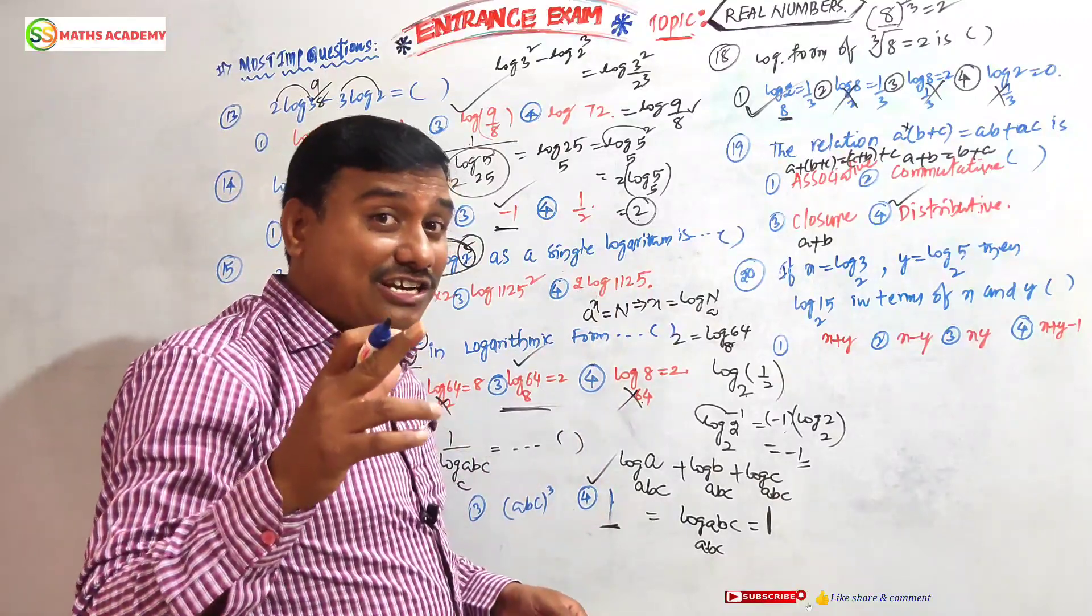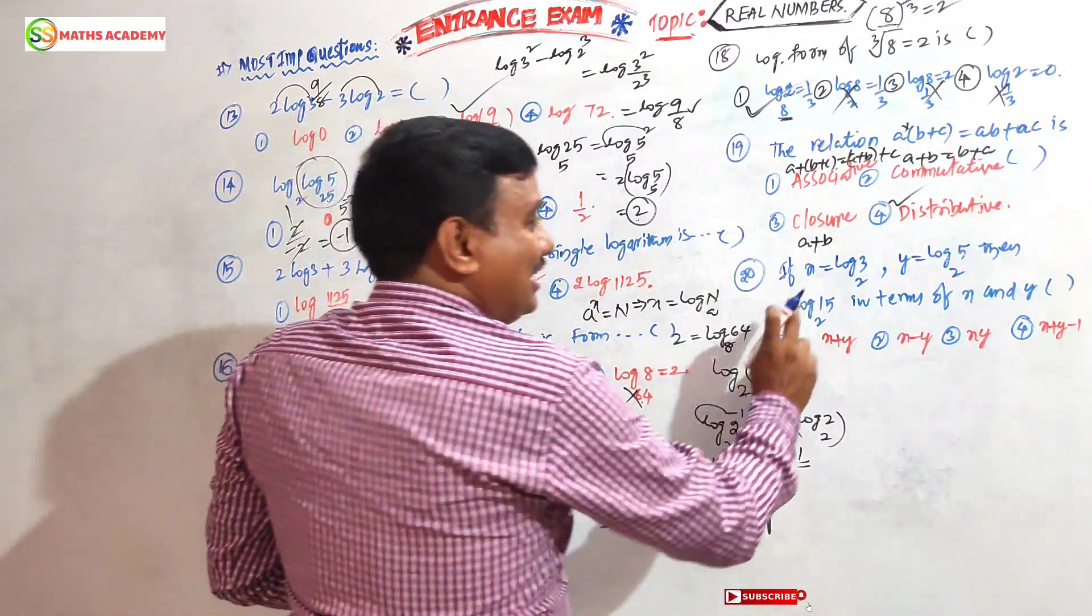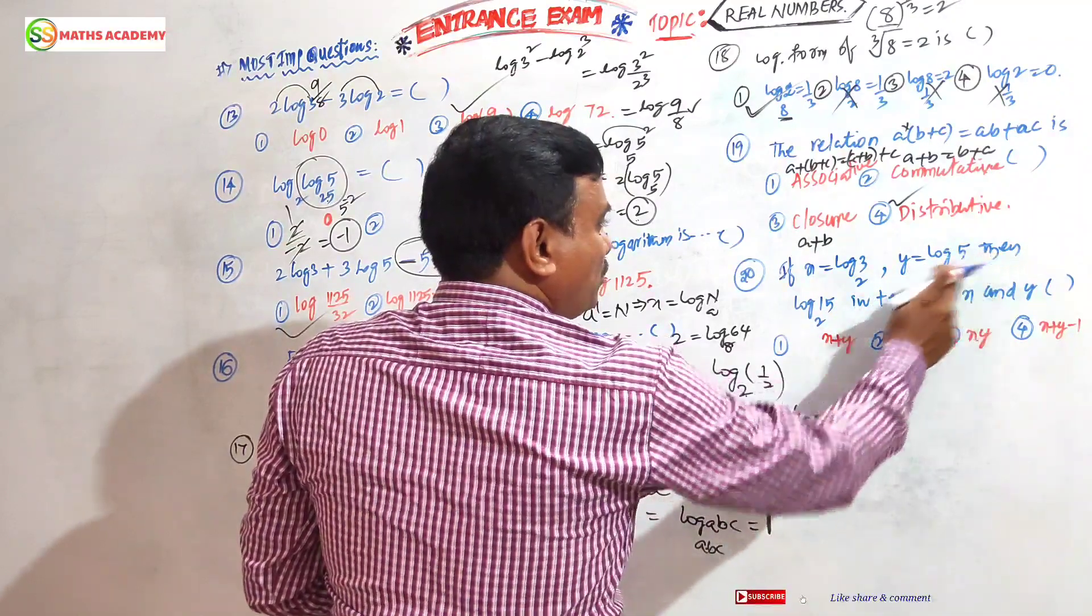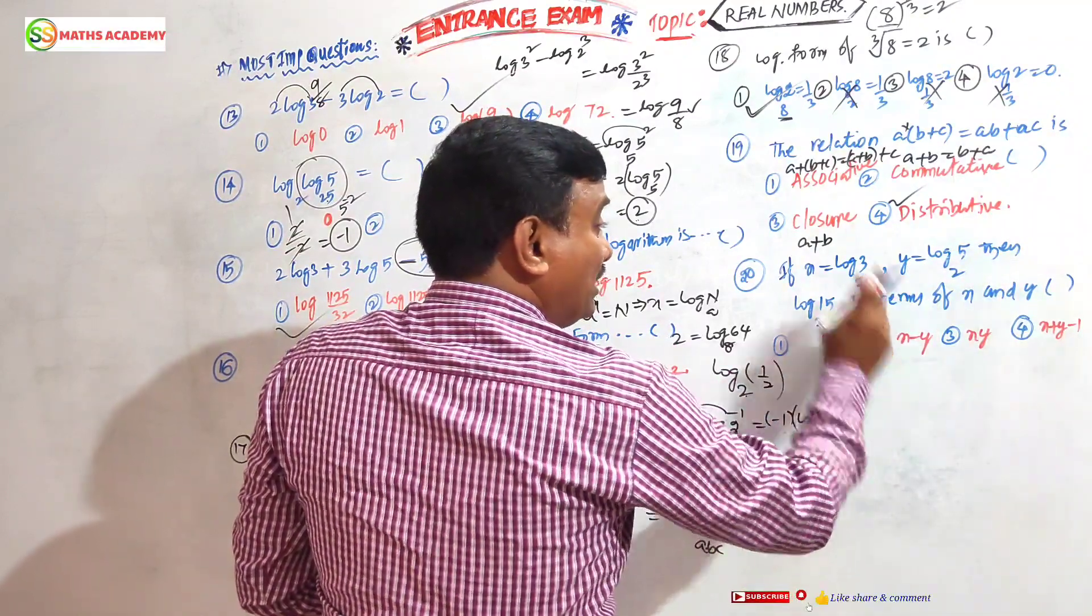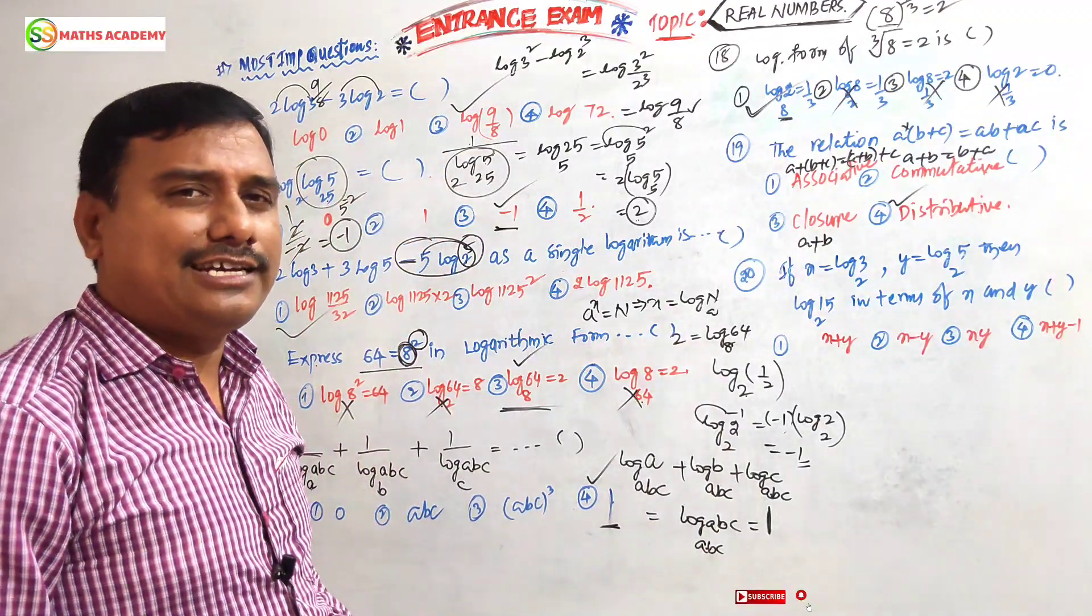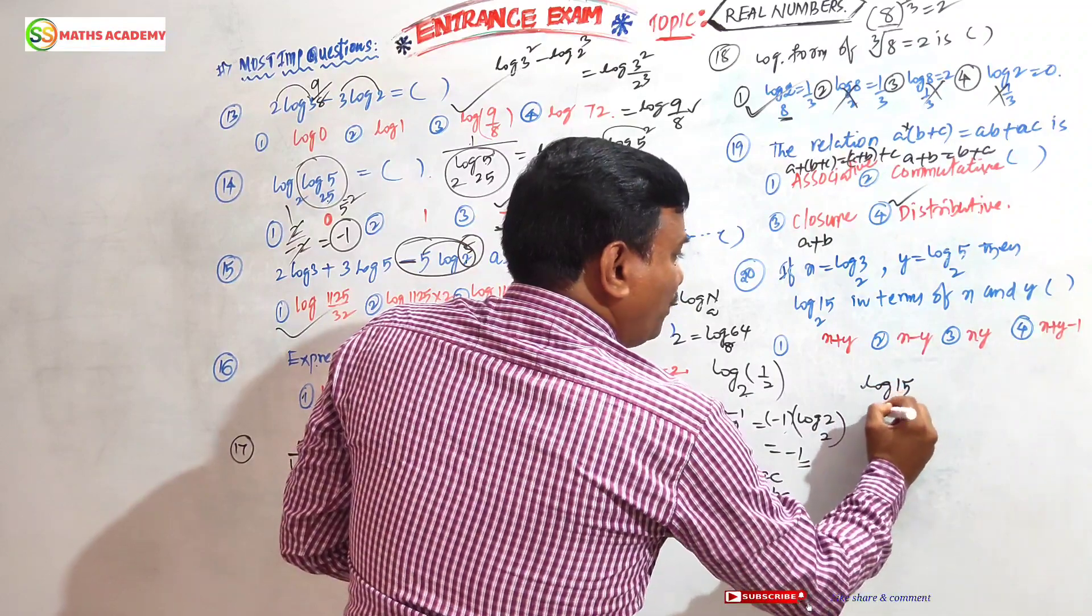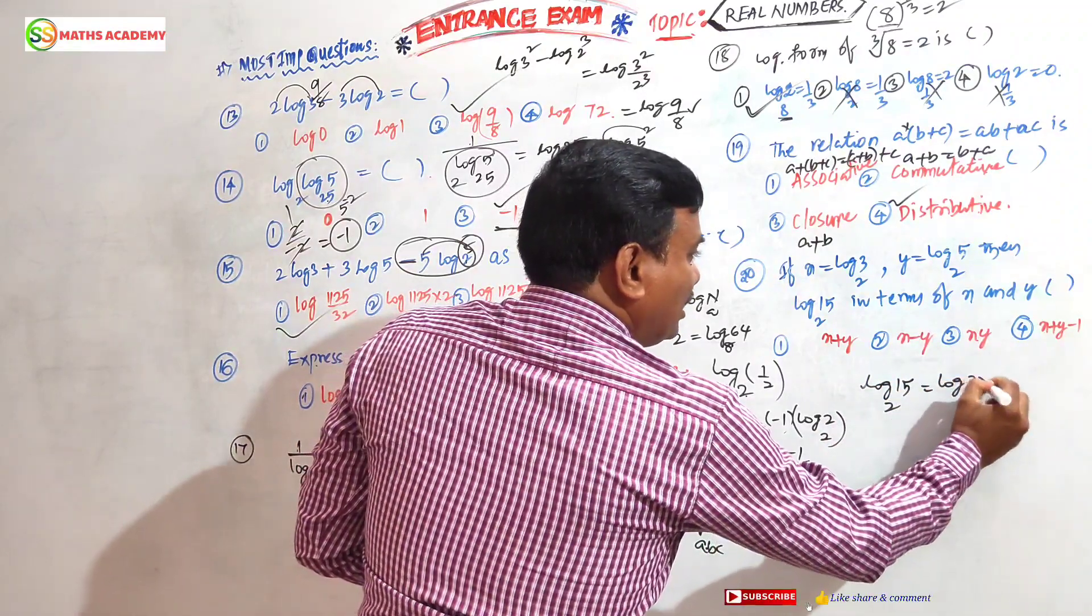If x equals log₂(3), y equals log₂(5), then find log₂(15) in terms of x and y. I will tell the technique. You see log₂(15), you can write like this: log₂(3×5).